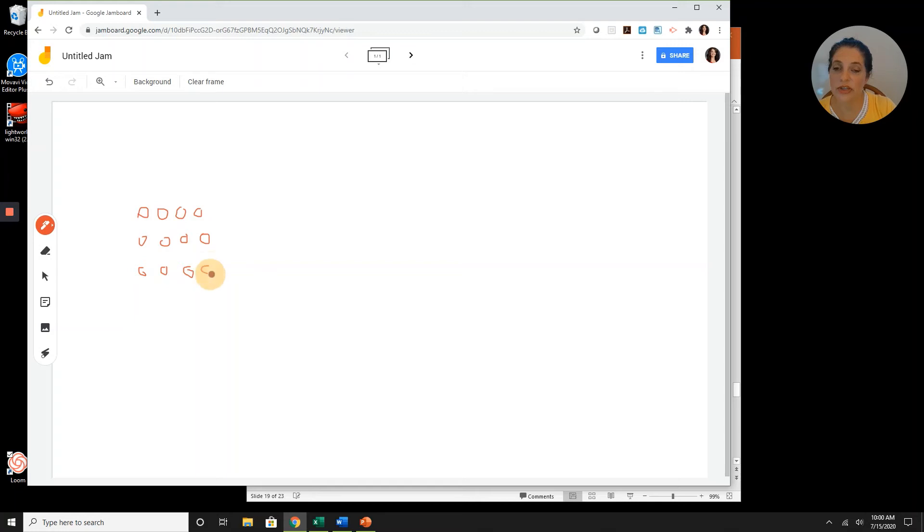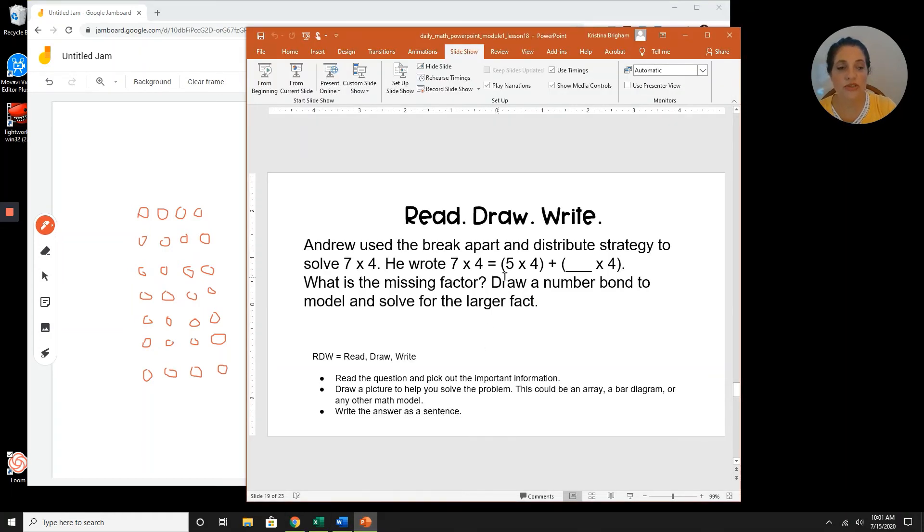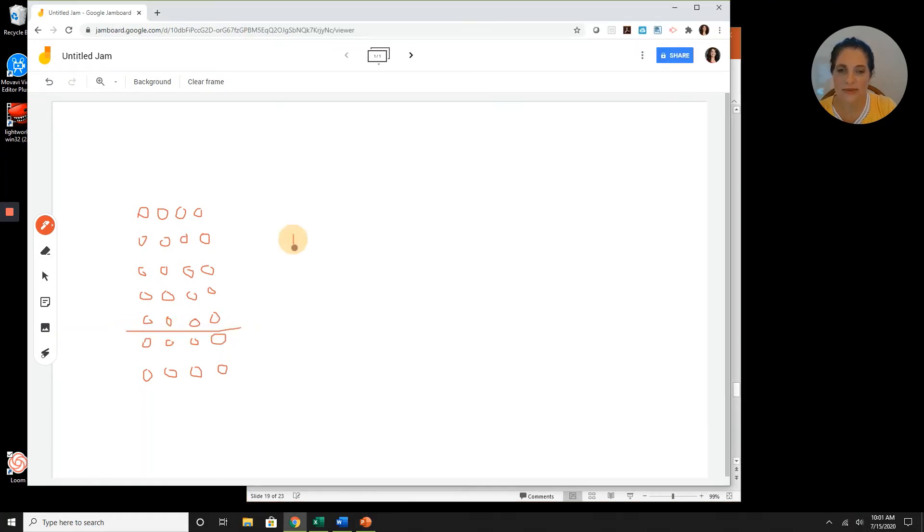So let's start by drawing an array that is seven times four. When you draw your array, you can write circles, you can make x's, you can use any shape that you would like. The circles are a little messy on Jamboard. Okay, that's one, two, three, four, five rows. Here's the sixth row and the seventh row. Okay, so going back to the question, I want to decompose into five times four and some other number times four. So I'm going to draw a line under the fifth row of four. One, two, three, four, five.